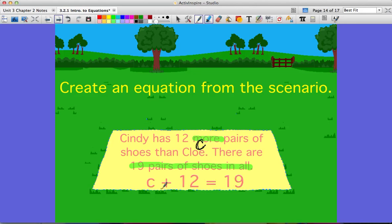I would add 12 to it and get the total of 19. So if I took 19 minus 12, I could get the number of shoes that Chloe has. And again, because I know that I would use subtraction, I know that I would make an addition equation. Look for these key words when you're setting up your equations.